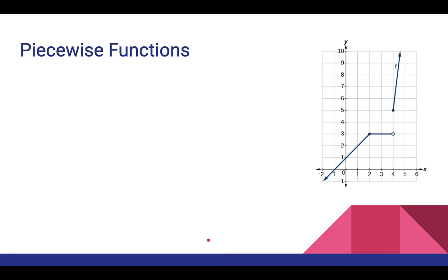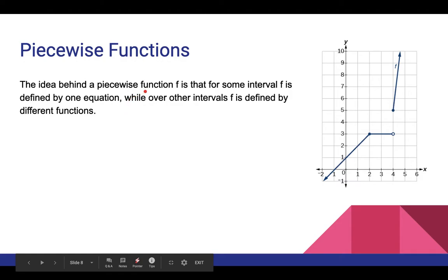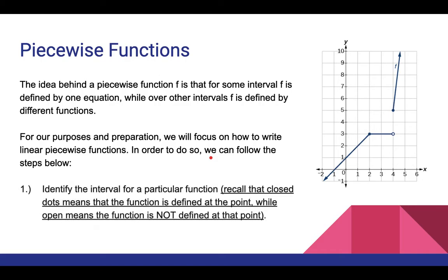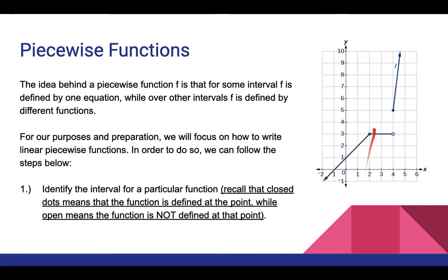Next we look at piecewise functions. The idea behind a piecewise function f is that for some interval, f is defined by one equation, while over other intervals, f is defined by other equations. For our purposes, we are only going to focus on how to write linear piecewise functions. Identify the interval for a particular function. A closed dot means the function is defined at the point, while an open dot means the function is not defined at the point. For example, at x equals 2, this line is defined; while at x equals 4, it is this other line that is defined because it has a closed dot there.